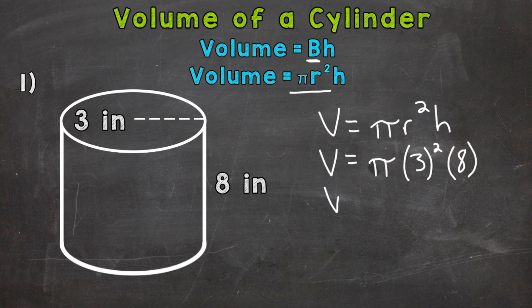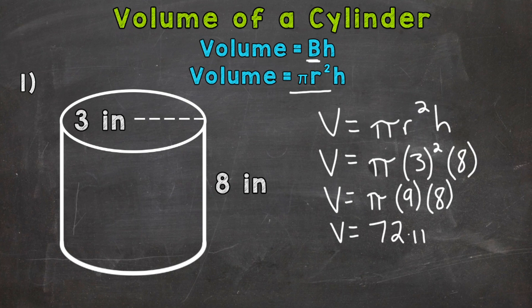So time to simplify and work our way down to the final answer. So we will do one step at a time here. So 3 squared would be first, which means 3 times 3. And that gives us 9 times the height of 8. So next step, we can do 9 times 8, which is 72. And we multiply that by pi.